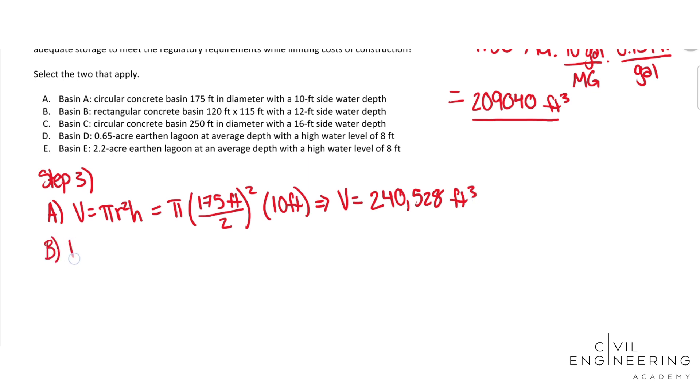And for B, we'll have a rectangular basin. So that's just a simple width times length times height equals 120 feet times 115 feet times 12 feet. And we will get volume equal to 165,600 feet cubed.